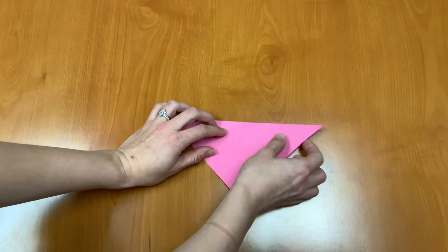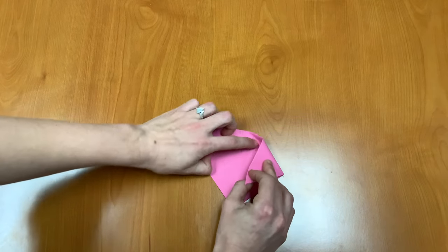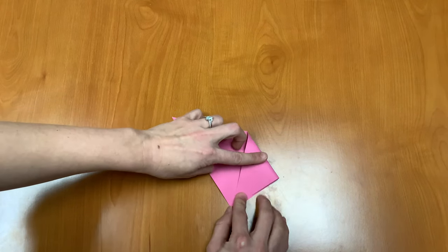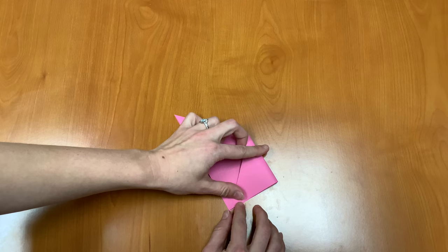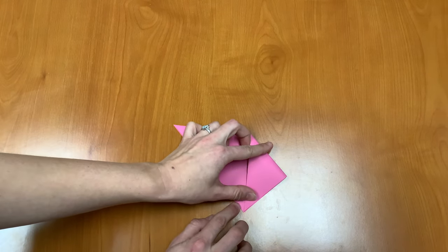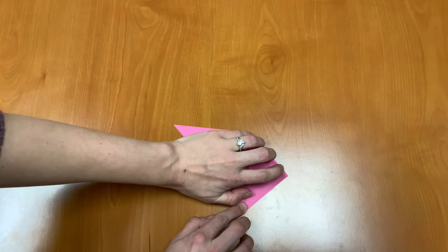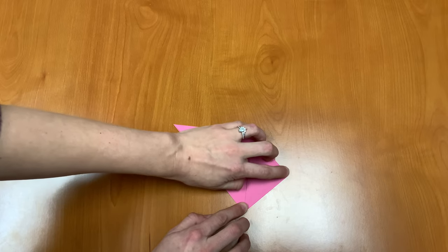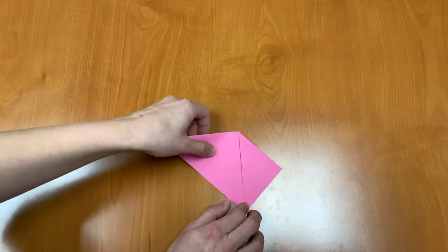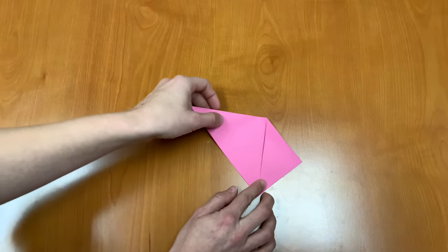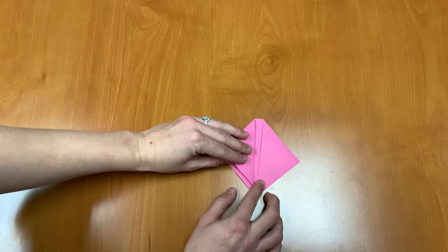Now we're going to take the right corner and fold it down to the bottom center point. We're going to do the same thing to the left corner. Fold the left corner down to the bottom center point.